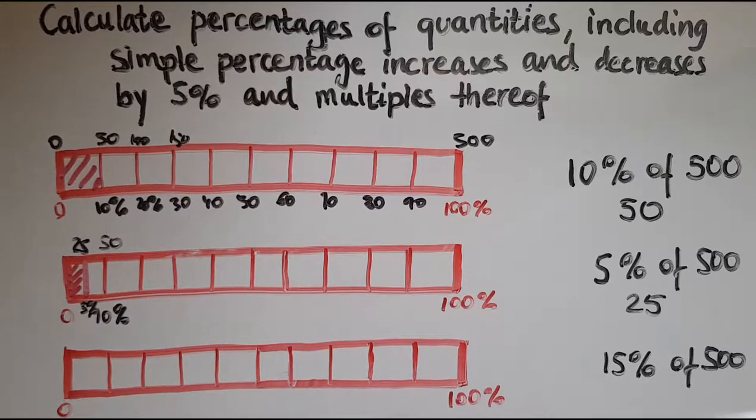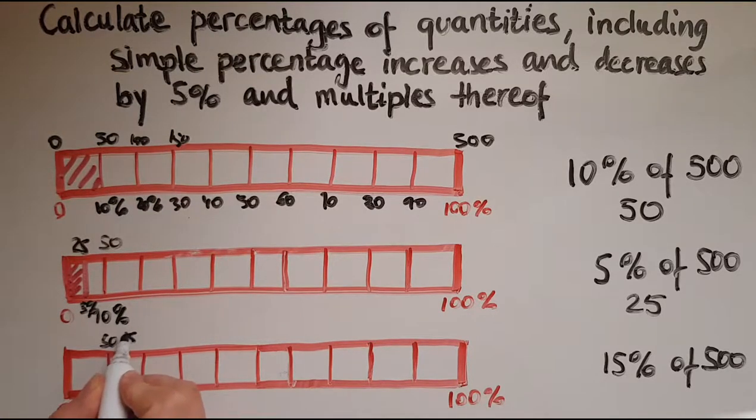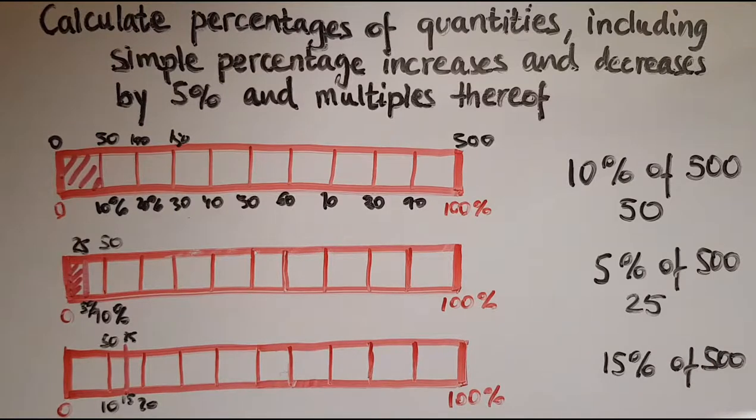How about 15%? Let's have a look at the bar. Where is that positioned? So here is 10%, there is 20. 15 must be between 10 and 20, right in the middle between 10 and 20. So this is 15. Now we said 10% was 50 and 5% was 25. So altogether, the 10 and the 5 make 15. So the 50 and the 25 makes 75. So at this point, I'd have 75. So 15% of 500 is 75.